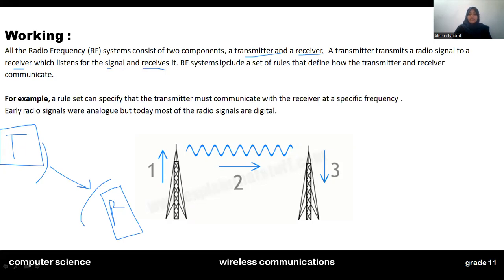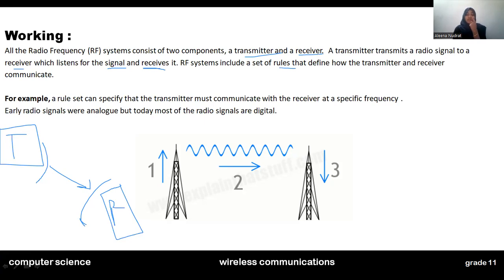The radio frequency system includes a set of rules. The transmitter can be used like a satellite to send radio signals, and the antenna can be used to receive radio signals. There are some set of rules according to which the transmitter and receiver communicate.